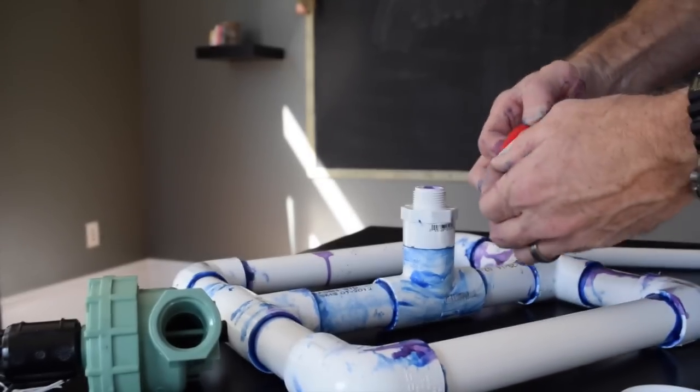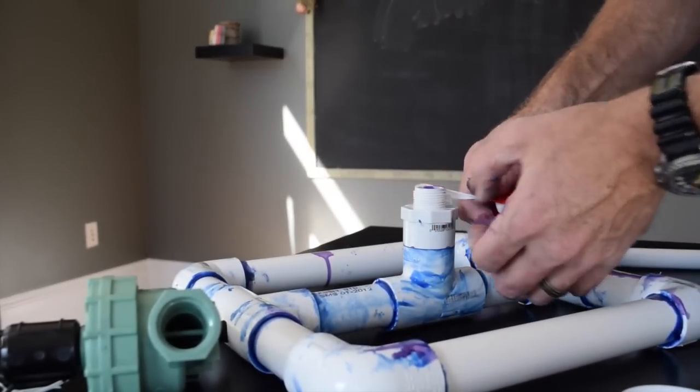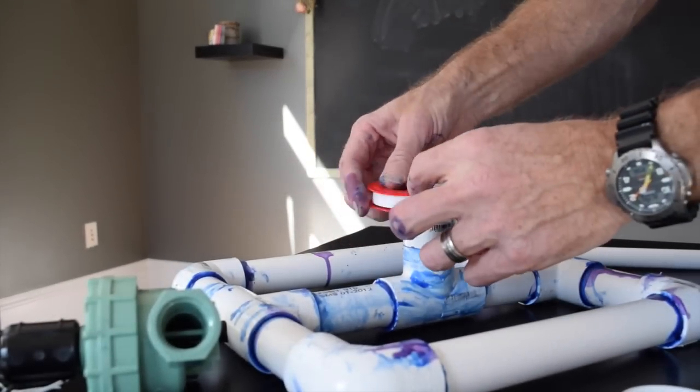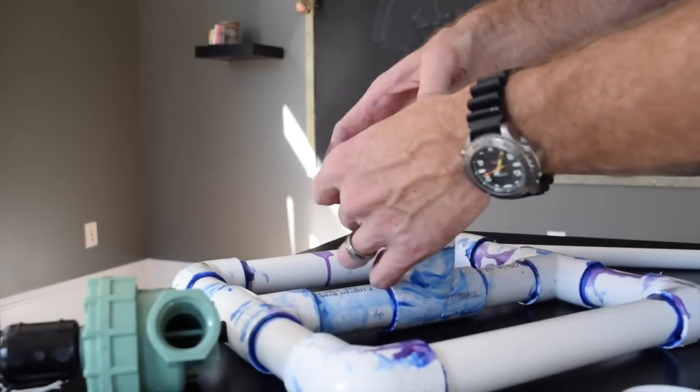The launch tube and valve system is put together using a reducer to go from the air chamber pipe size to the 3/4 inch thread fitting used by the sprinkler valve.